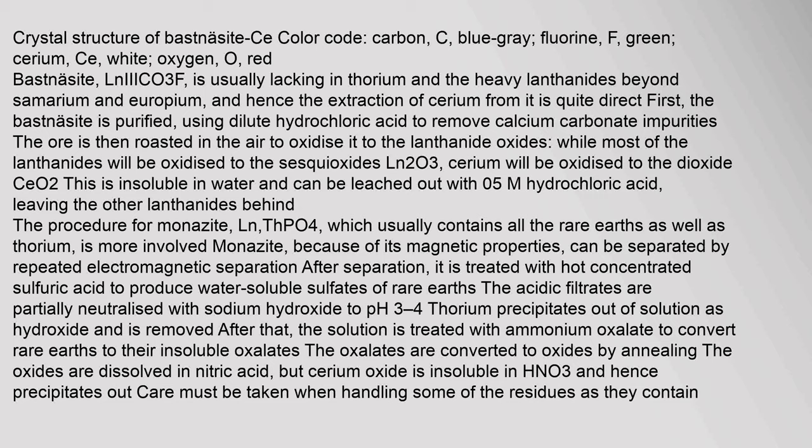Bastnäsite (LnIII CO3F) is usually lacking in thorium and the heavy lanthanides beyond samarium and europium, and hence the extraction of cerium from it is quite direct. First, the bastnäsite is purified using dilute hydrochloric acid to remove calcium carbonate impurities. The ore is then roasted in air to oxidize it to the lanthanide oxides; while most lanthanides will be oxidized to the sesquioxides Ln2O3, cerium will be oxidized to the dioxide CeO2, which is insoluble in water and can be leached out.